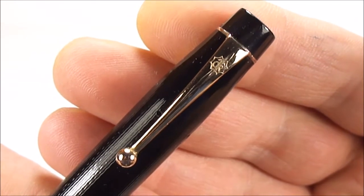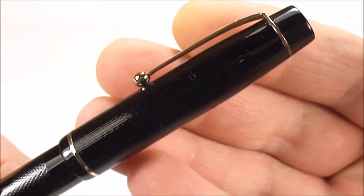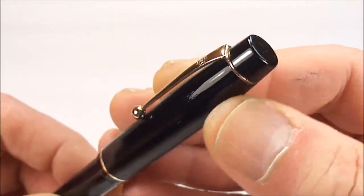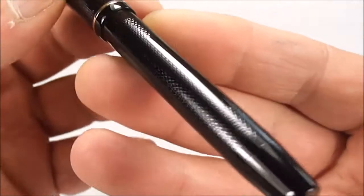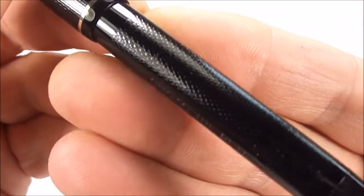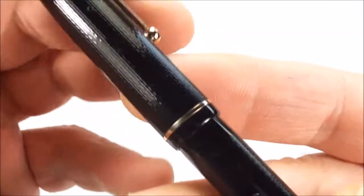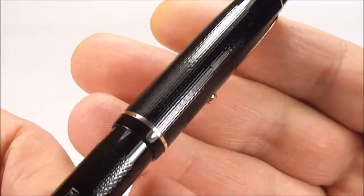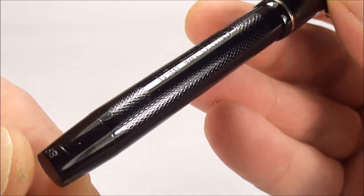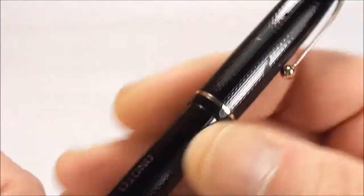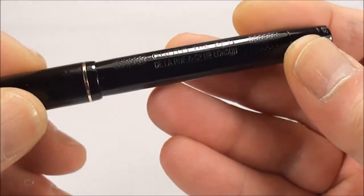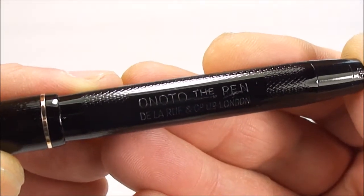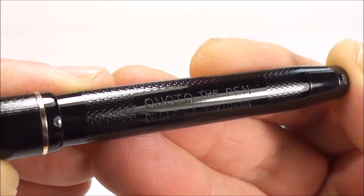You can see at the top there it's got this black cap stud. First of all, let me show you the barrel - you can see it's got this lovely chasing pattern. Let's give you a couple of different angles so it's nice and clear for you. If we show you the barrel imprint, which again is lovely and clear, it reads Anotto the pen, Delarue and Company Limited London. I'm hoping that's nice and clear for you.